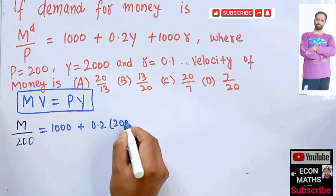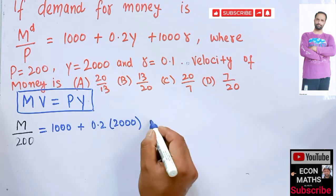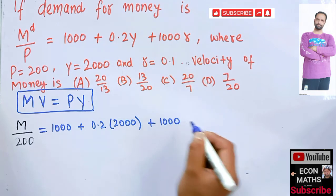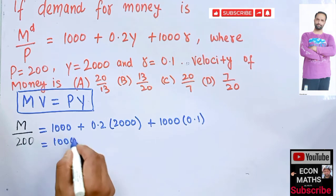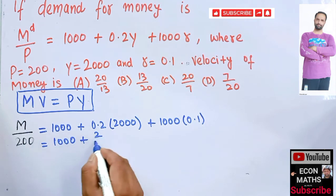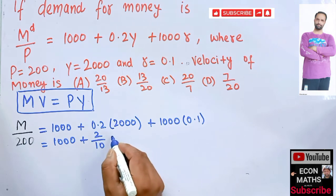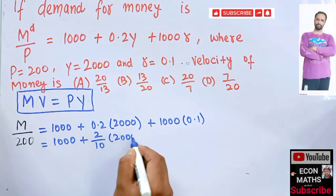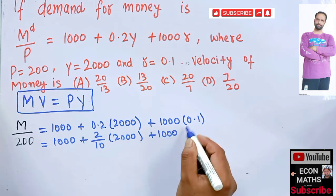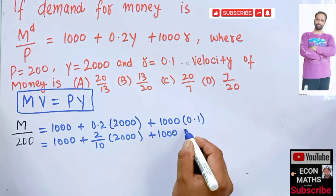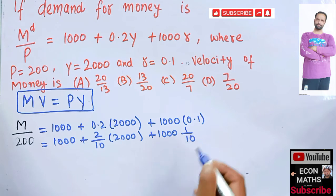The value of Y is given as 2000, plus we have 1000, and the value of r is 0.1, which is 1000 plus this can be written as 2/10 times 2000, plus 1000, 0.1 can be written as 1/10.